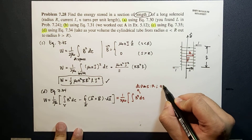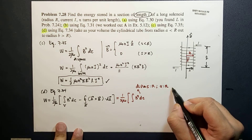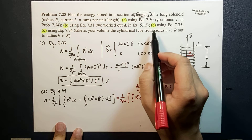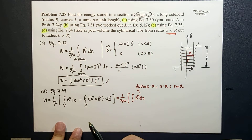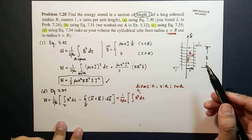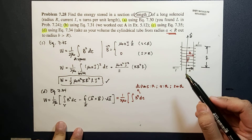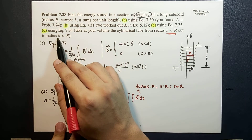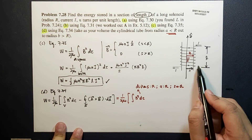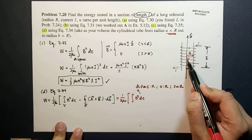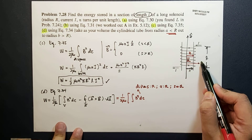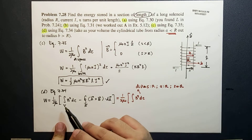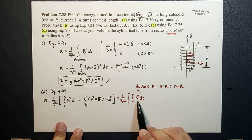The integration for ds runs from a to R, where s is greater than or equal to a. For outside where s is greater than R — let's call that region b — the integral there will be zero because the magnetic field is zero.